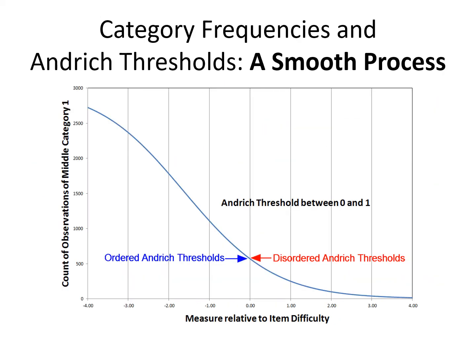Let's summarize this information. What we see is how the Andridge thresholds relate to the count of observations in the middle category in our example. When the Andridge thresholds are far apart — that's the left-hand end of the graph — nearly everybody is responding in the central category, almost 3,000 people. When the Andridge thresholds have zero difference, the thresholds go from ordered to disordered and the number of observations in the central category drops — but notice it drops smoothly. There isn't any sudden change in the behavior of the instrument. The disordered Andridge thresholds may be a problem for inference, but they're not a problem mathematically.